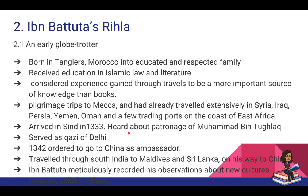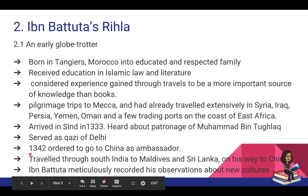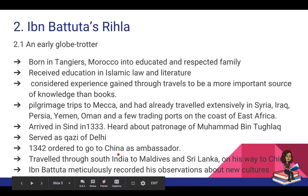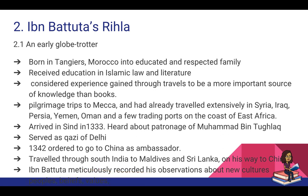Ibn Battuta arrives in Sindh in 1333, having heard about the patronage of Muhammad bin Tughlaq. He was appointed as the Kazi of Delhi by the sultan. He had some misunderstanding with the sultan and was imprisoned for a while, but once cleared he was freed. In 1342 he was ordered to go to China as Muhammad bin Tughlaq's ambassador. While on his way he traveled through South India to the Maldives and Sri Lanka, then along the coast of eastern India, reaching China. From China he did not return to India but traveled back to Morocco.